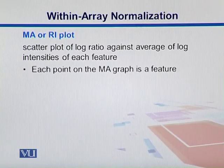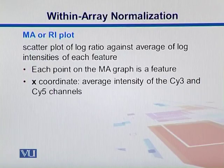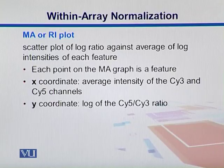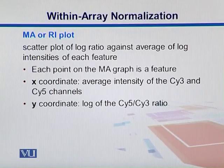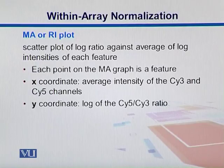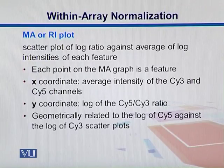Each point on the MA graph is a feature. On the X axis, we put the average intensity of CY3 and CY5. The Y axis is the log of the CY5 to CY3 ratio. We take the average intensities of both and plot them against the log of their fold change. Fold change refers to how many times the expression is higher in CY5 versus CY3. Geometrically, it is related to the log of CY5 against the log of CY3 in scatter plots.